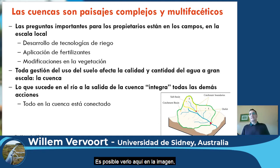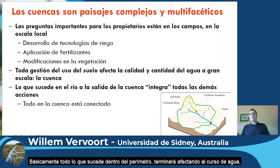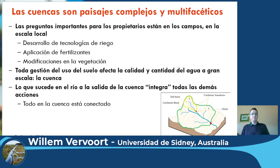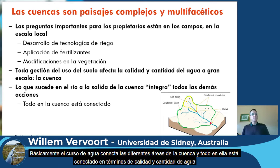You can see that here. Basically everything that happens within this boundary will end up in the stream, or will be reflected in the stream and can be seen at the outlet. The stream connects the different catchment areas, and this means that everything in the catchment is connected in terms of water quality and water quantity.